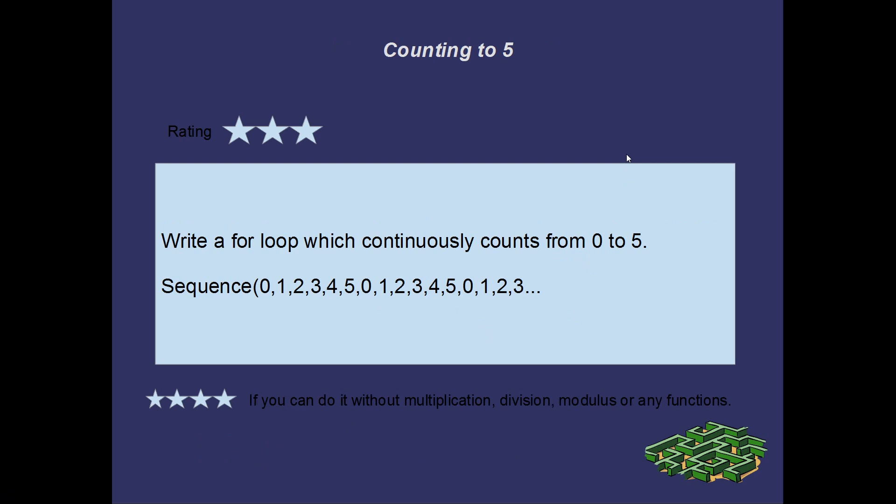Okay, so counting to 5. Here we go, another puzzle. This has got a 3 star rating, or 4 stars if you can do it without multiplication, division, modulus or any functions. But the pattern is pretty simple. I want you to write a for-loop which continuously counts from 0 to 5, then starts again. So 0, 1, 2, 3, 4, 5. 0, 1, 2, 3, 4, 5. Et cetera, et cetera. So that's a 3 star problem. Give it a shot. Good luck.